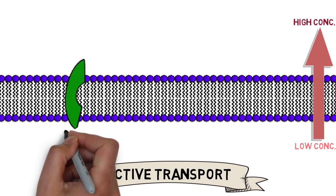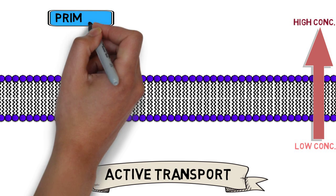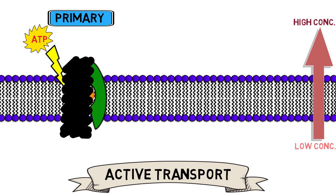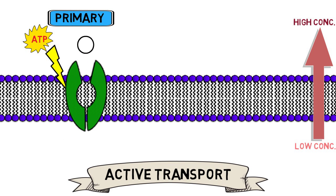The first type of active transporters are classified as primary active transporters, where an energy carrier molecule called ATP supplies the required energy to change the transporter's shape, helping to move the molecule across.